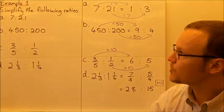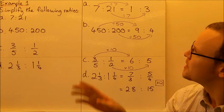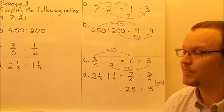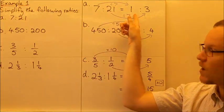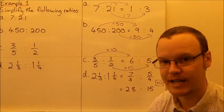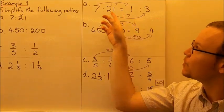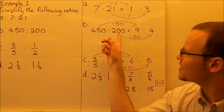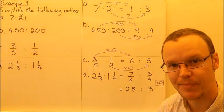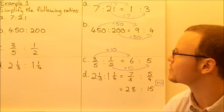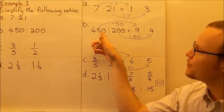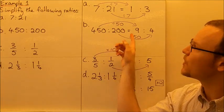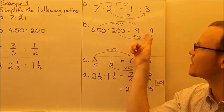Let's look at a couple of examples. First, we're going to simplify these ratios. Looking at 7 to 21: the highest common factor of 7 and 21 is 7, so we divide both numbers by 7. 7 divided by 7 is 1 and 21 divided by 7 is 3, so the simplified form of 7 to 21 is 1 to 3. Next, 450 to 200: the highest common factor — the highest number we can divide them both evenly by — is 50. So 450 divided by 50 is 9 and 200 divided by 50 is 4, giving the simplified form 9 to 4.